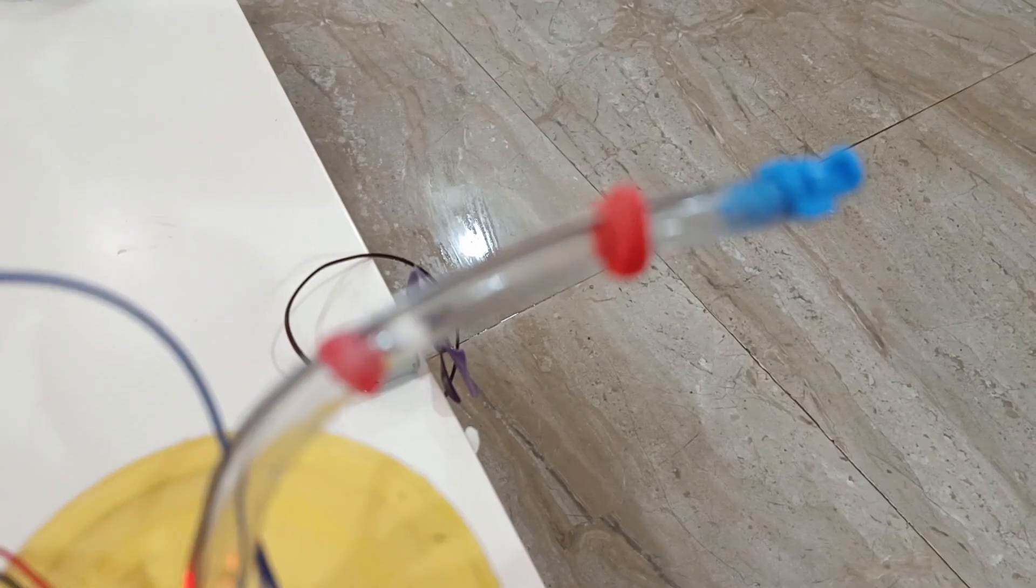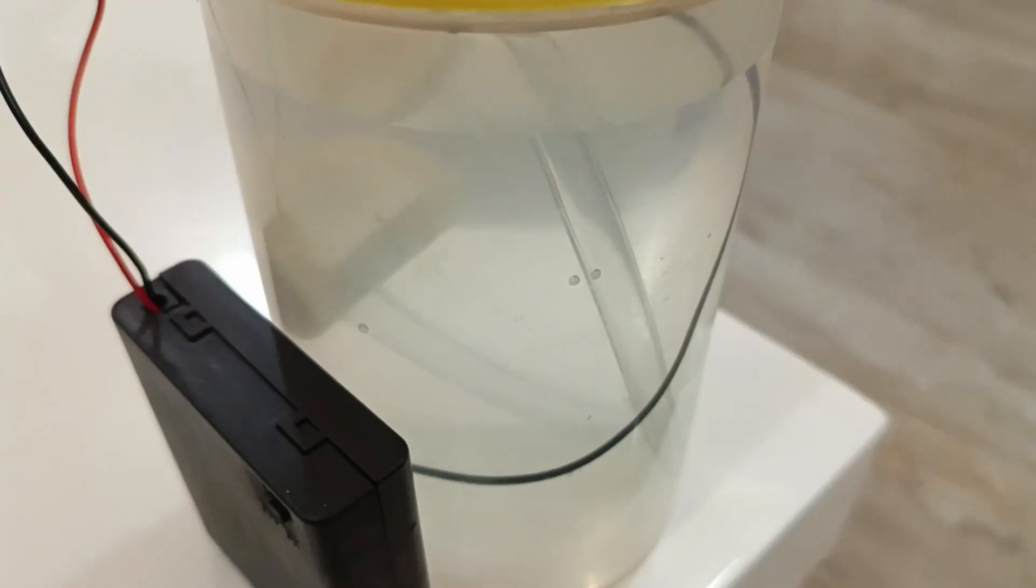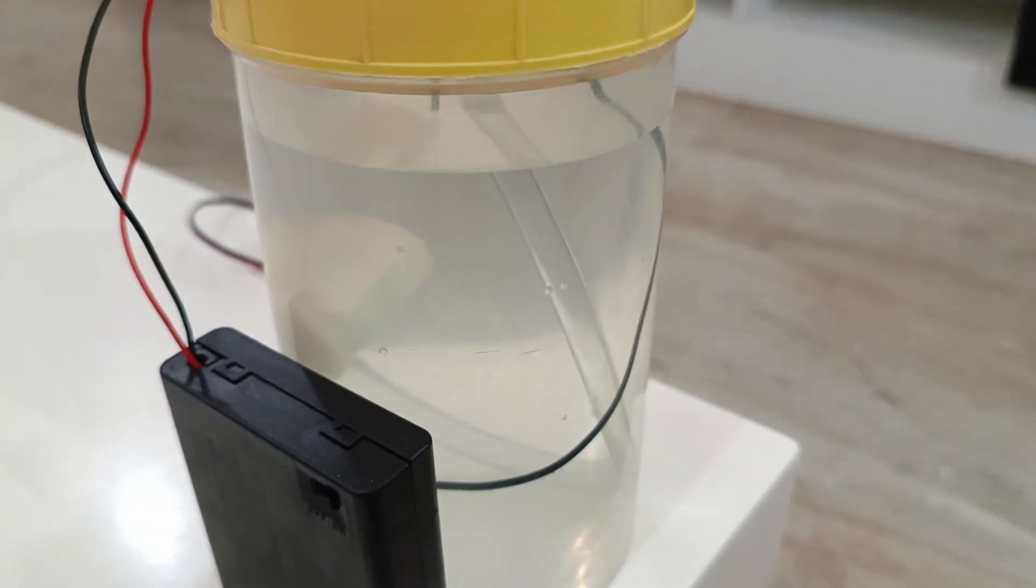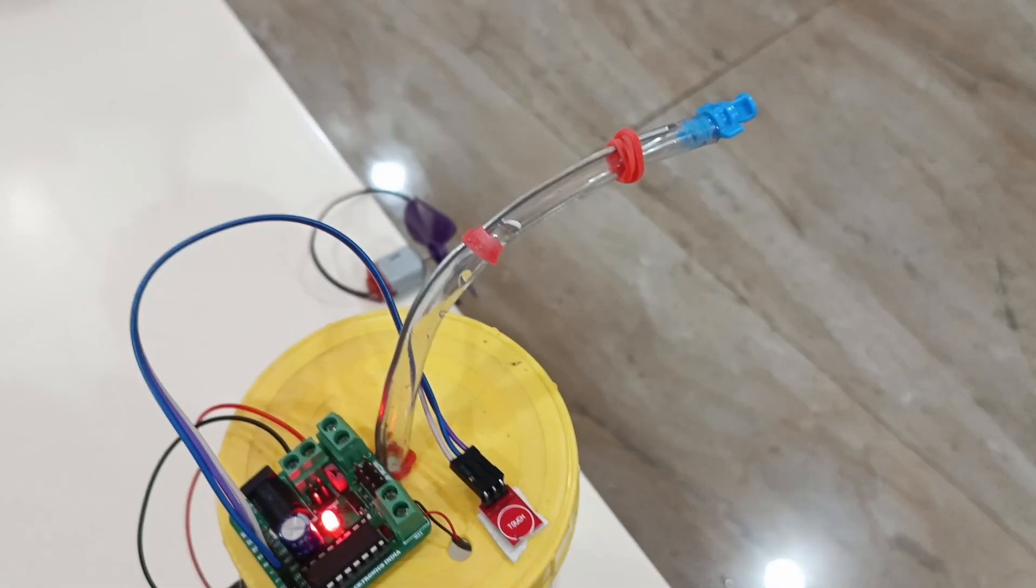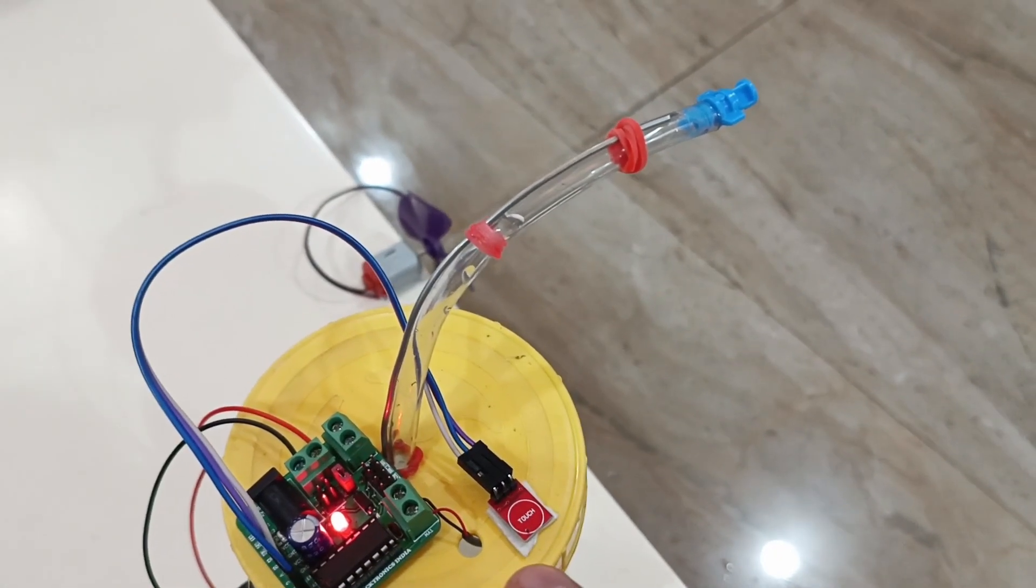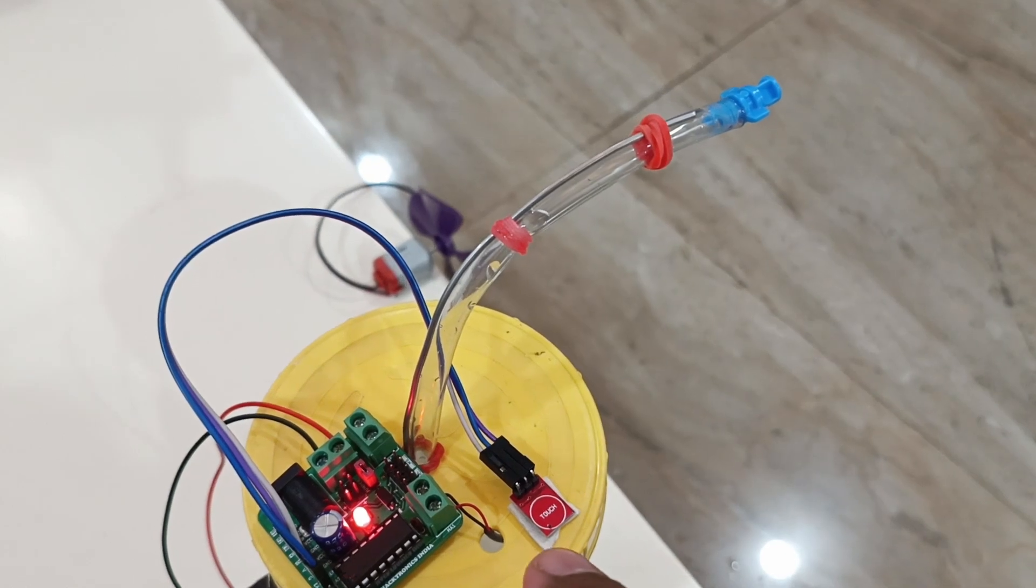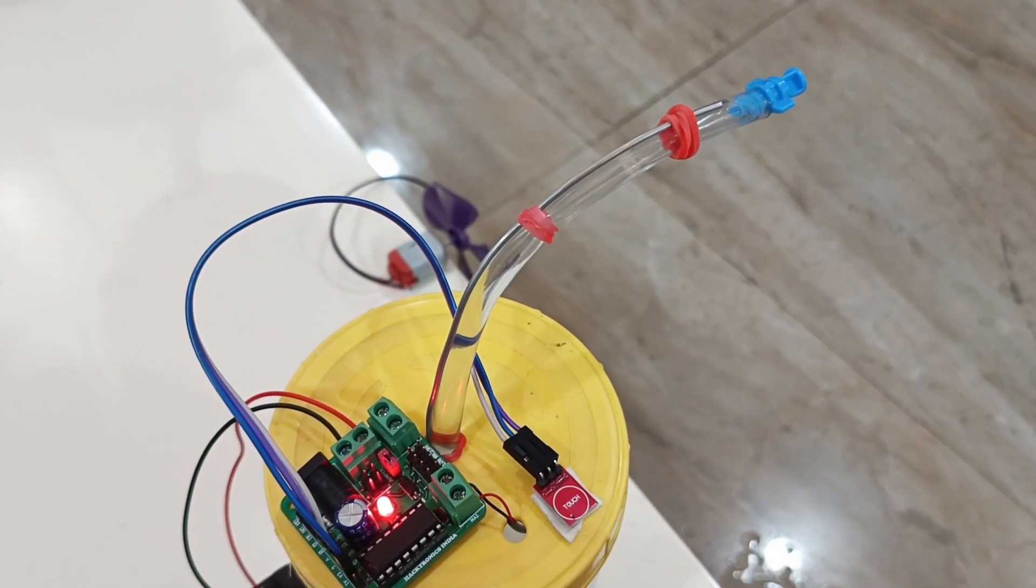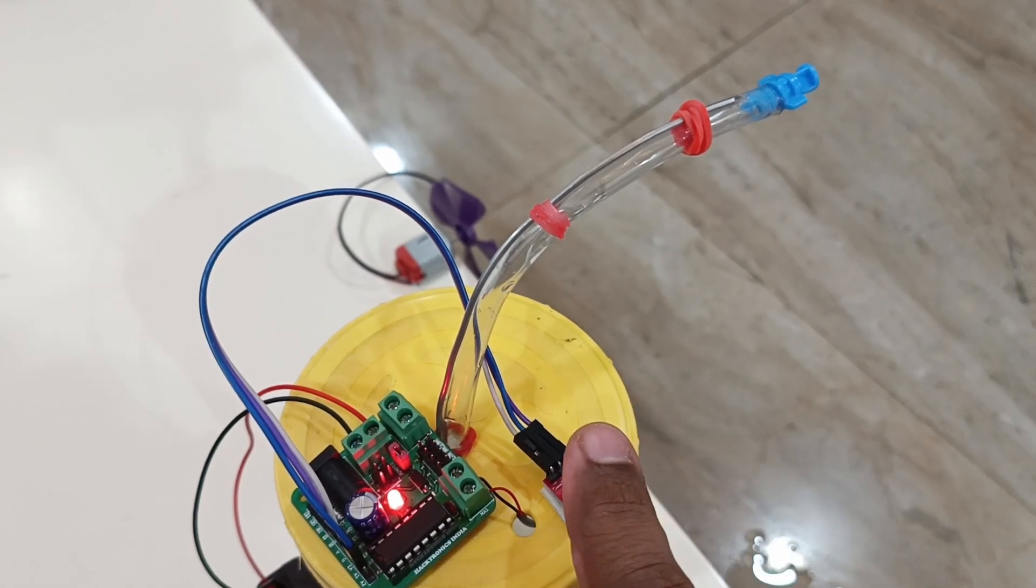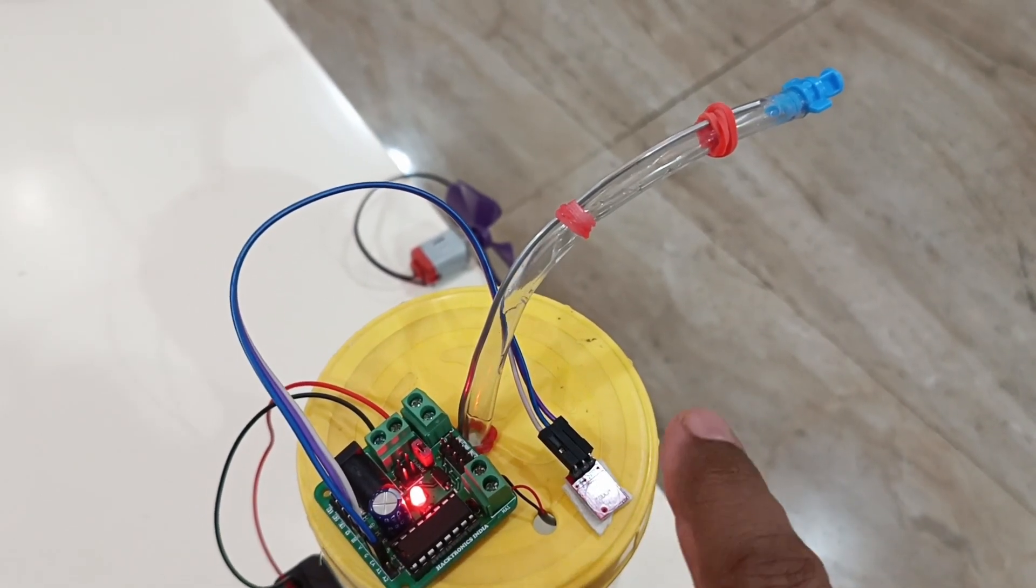This is the tube that is connected to the water pump which is inside this container filled with water. Whenever I touch this touch switch, it will automatically dispense the water. As soon as I remove my hand, it will stop dispensing the water.